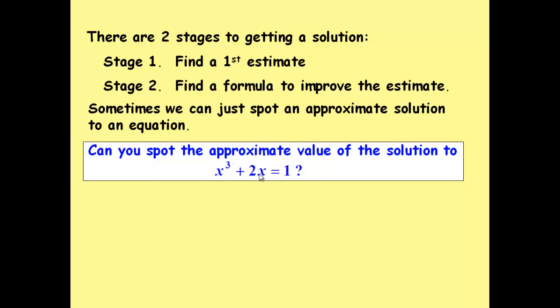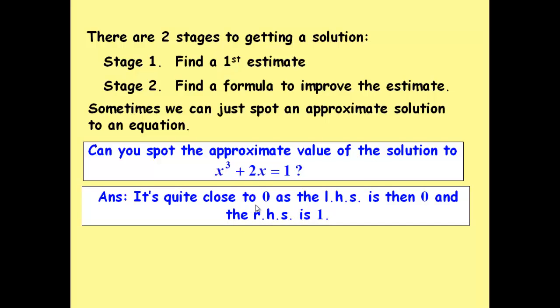Sometimes it's easy to spot an approximate solution. For example, if we've got this equation here, you can see numbers close to there. For example, if we choose 0 as x, we're not that far away, are we? We'd get 0 on the left and 1 on the right.